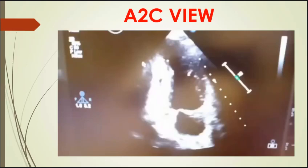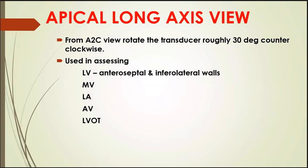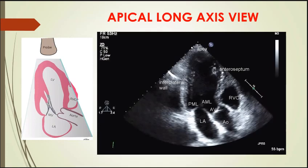Next is the apical three-chamber view, also called the apical long axis view. From the two-chamber view, the probe is rotated anti-clockwise again about 30 degrees. Here, the LA, LV, and aortic valve are seen, and additionally the mitral valve, the LV inflow and LV outflow tract are clearly seen in the apical long axis view.